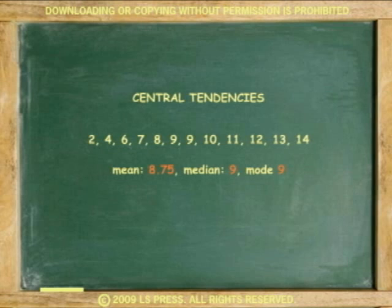Let's talk about central tendencies now. A set of data is said to have central tendencies if the value of the mean, median, and mode are the same or nearly the same.